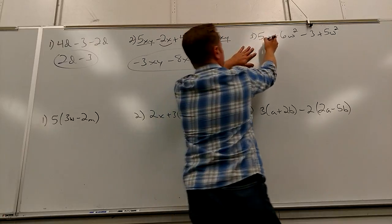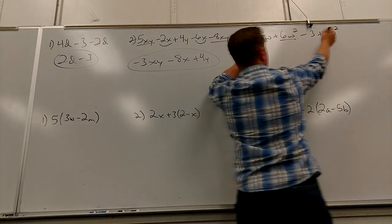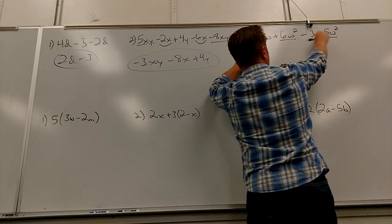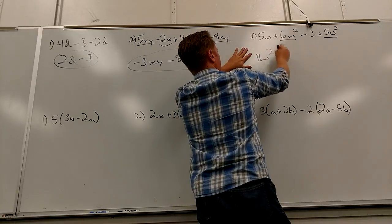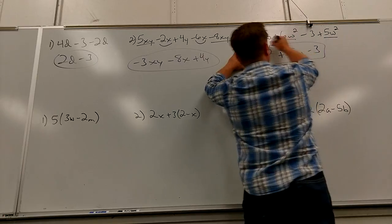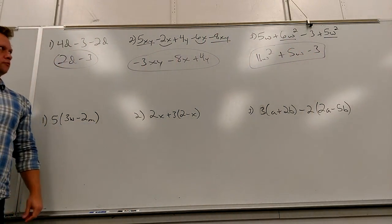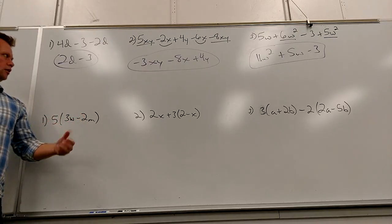And then here... any like terms with this guy? No. This guy? Yes. And this guy? No. So six of these? Five of these? Eleven of these? And then you've got the plus 5W and the minus three just sort of hanging out there. Nobody to go with at all. Cool. Not too bad.